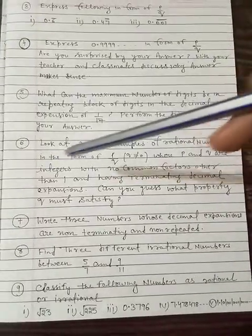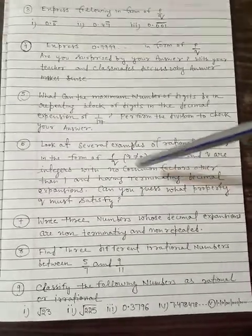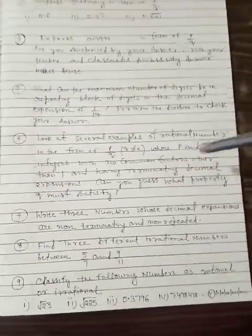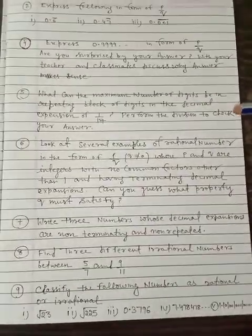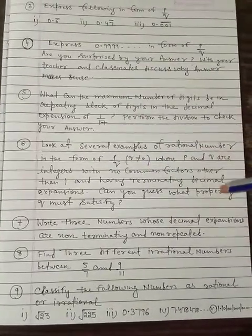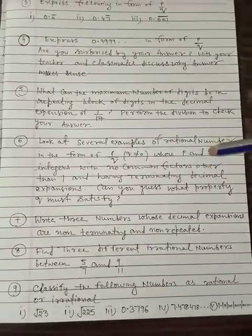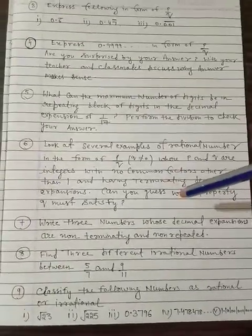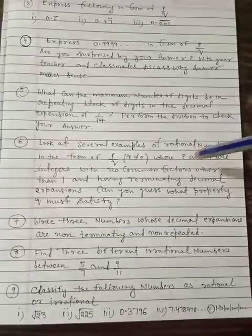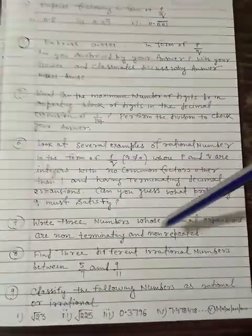Let's move on to question number 6. Look at several examples of rational numbers in the form of p upon q, where p and q are integers with no common factors other than 1 and having terminating decimal expansion. Can you guess what property q must satisfy? In this question, you have to take examples of rational numbers in p upon q form that terminate after decimal. You need to take 4-5 examples of terminated rational numbers. You have to check and see what property the denominator q holds that makes the rational number terminate.